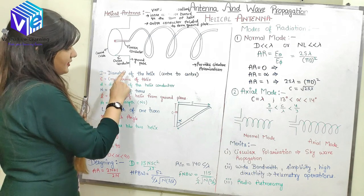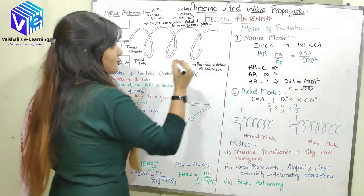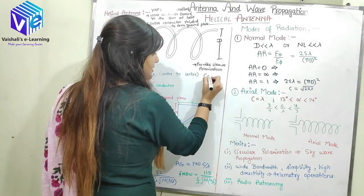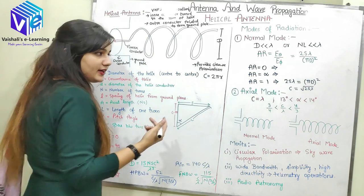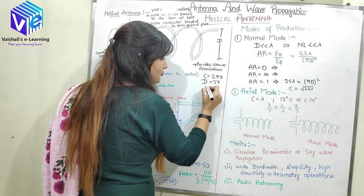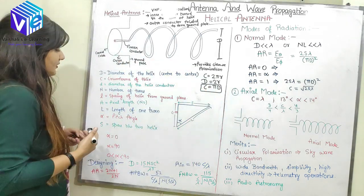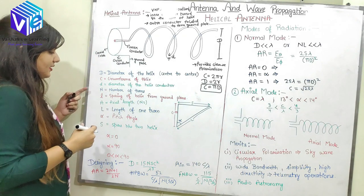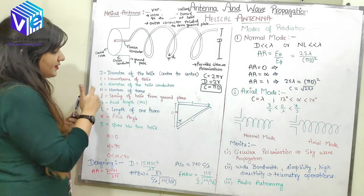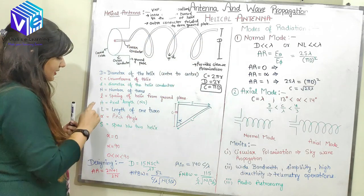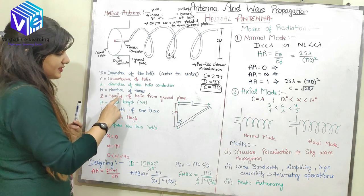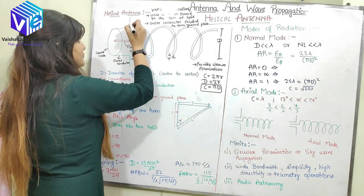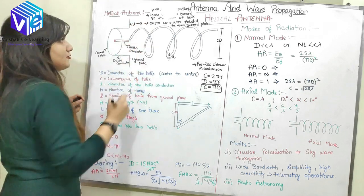The first parameter is capital D, which is the diameter of the helix from centre to centre. C is the circumference of the helix, so C is equal to 2πR. Since diameter equals 2R, C can also be written as π times D. Small d is the diameter of the helix conductor. Capital N represents the number of turns — the total number of turns in the helical antenna. Small l is the spacing of the helix from the ground plane.